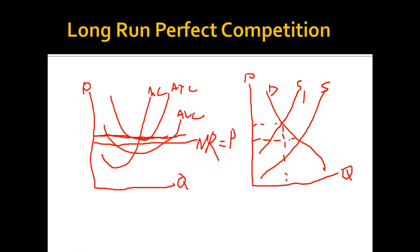Perfect competition can also react the other way. If firms are making money, more firms will see this and enter the industry. This increases the supply of the good and decreases the price back down to the equilibrium point.